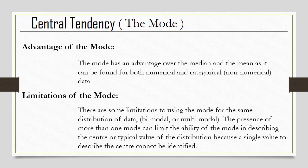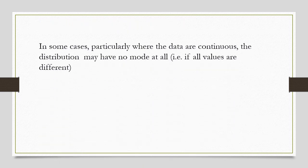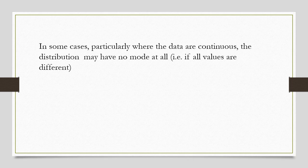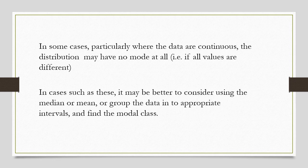Limitations of the mode: there are some limitations to using the mode for the same distribution of data, bimodal or multimodal. The presence of more than one mode can limit the ability of the mode in describing the centre or typical value of the distribution because a single value to describe the centre cannot be identified. In some cases, particularly where the data are continuous, the distribution may have no mode at all. In cases such as these, it may be better to consider using the median or mean or group the data into appropriate intervals and find the modal class.